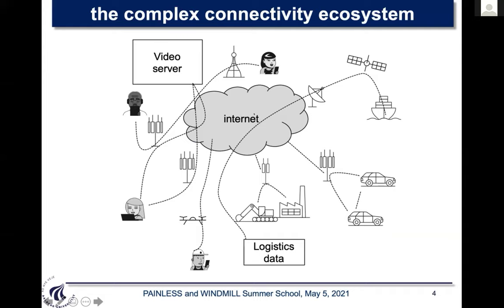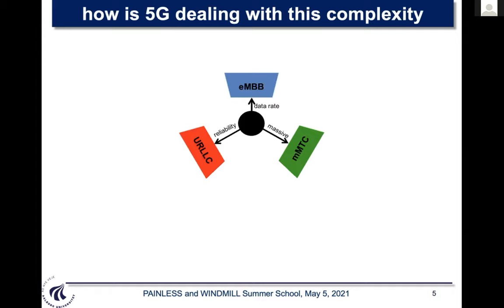The ecosystem of connectivity is becoming very complex because we have many different connections with very diverse requirements — somebody wants high rate, somebody wants many devices connected, somebody wants low latency, and so on. In principle, you could develop a separate communication system for each requirement. But the success of the internet is architectural — there was an architecture to support many different types of connectivity. Following that architectural success, we can take a systematic approach to address this connectivity ecosystem.